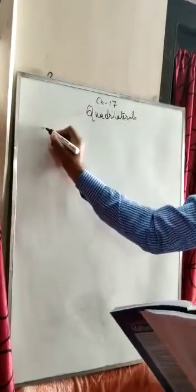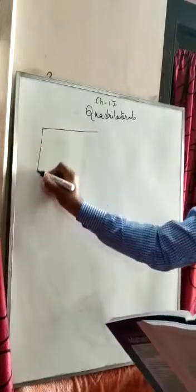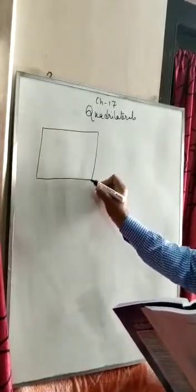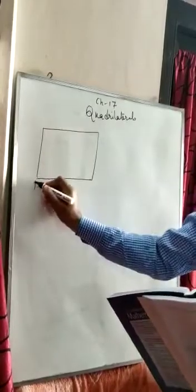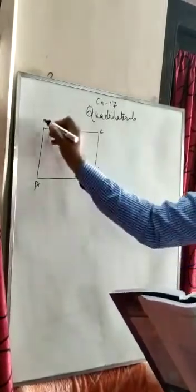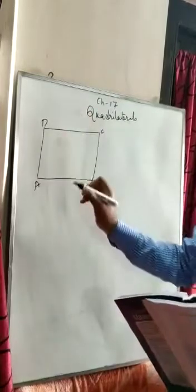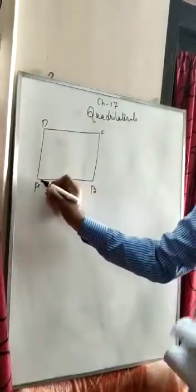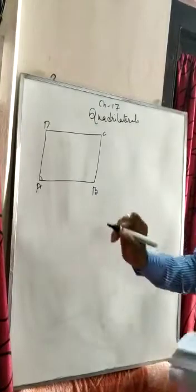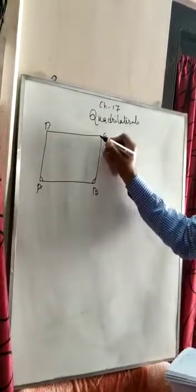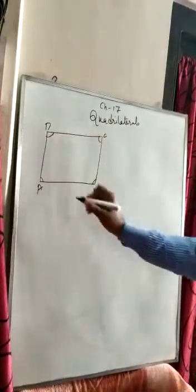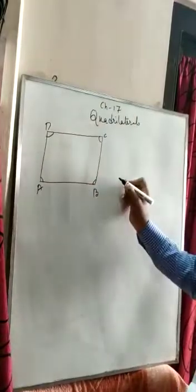A quadrilateral is a four-sided figure. The four vertices are A, B, C, D. These are the four sides and four vertices of the quadrilateral, giving us four angles: angle A, angle B, angle C, and angle D.